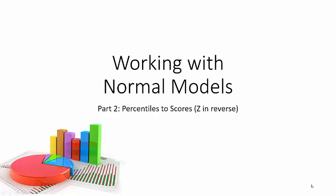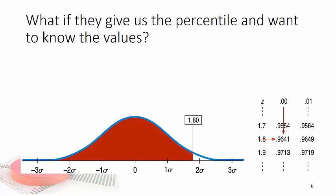In the previous video we were looking up percentiles based on z-scores that we calculated from data points. Now we're going to go backwards. So what if they give us the percentile and want to know the data point?